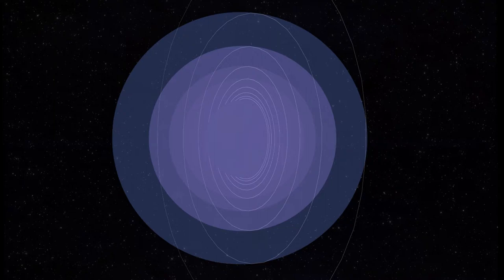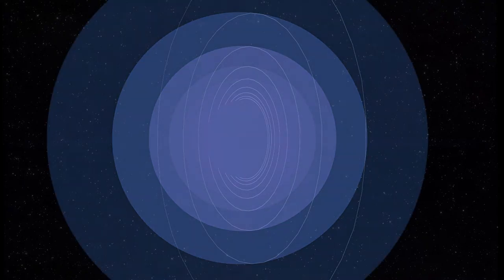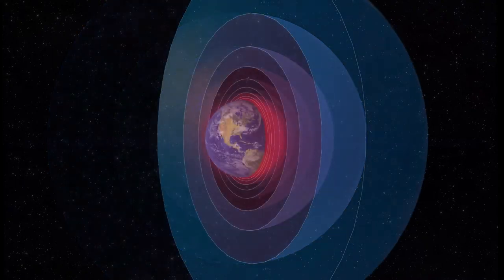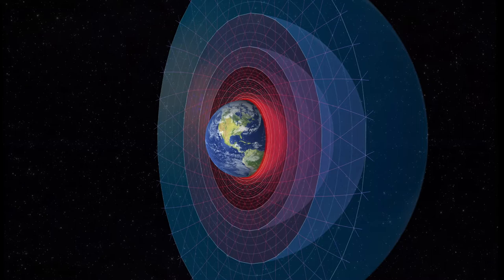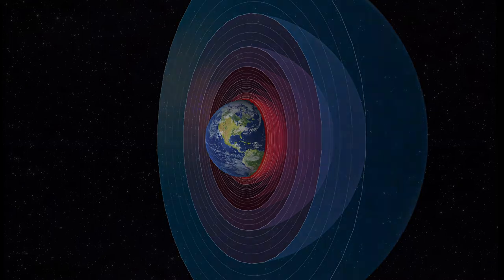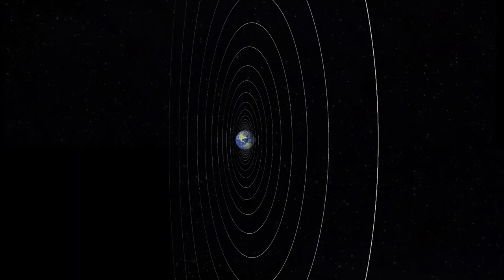By overlaying the time compression structure, it becomes obvious how the two-dimensional representation becomes a three-dimensional structure — a structure that stretches radially outward for millions of miles.